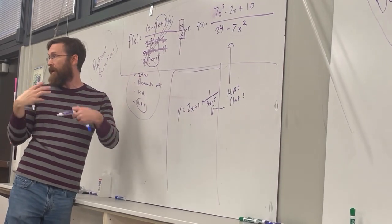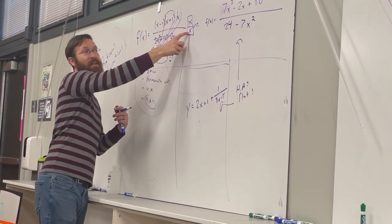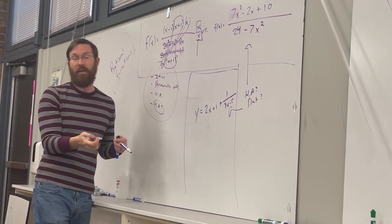So you know, when the denominator is zero, you get an undefined value. So this is just inserting a hole at x equals zero, removable discontinuity.